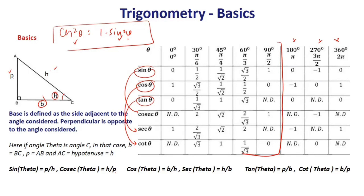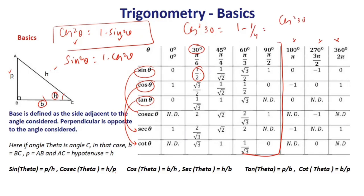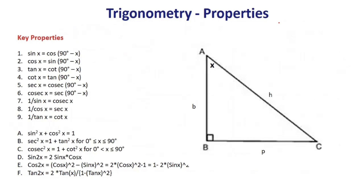cos²θ = 1 − sin²θ, and similarly sin²θ = 1 − cos²θ. If you know sin30 = 1/2, you can find cos30: cos²30 = 1 − sin²30 = 1 − 1/4 = 3/4, so cos30 = √3/2. If you know either sine or cosine of any angle, you can calculate all other ratios.